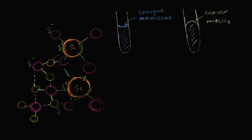But it's one thing to just observe this and to name them — to say, hey, this is a concave meniscus. But a more interesting question is, why does it actually happen? You might imagine this concave meniscus is because the fluid is more attracted to the container than it is to itself.